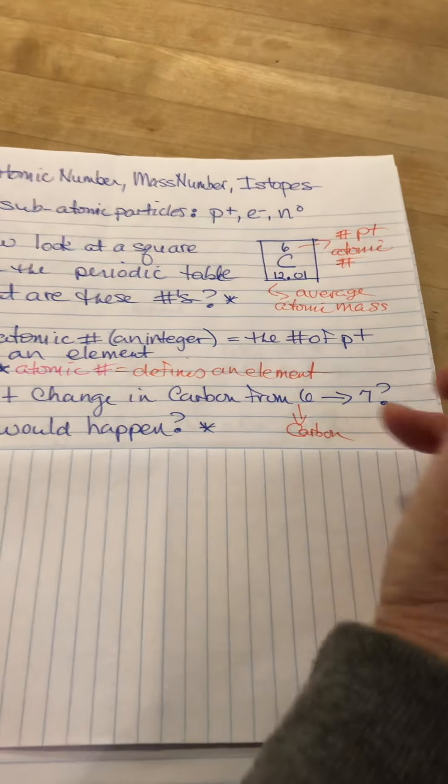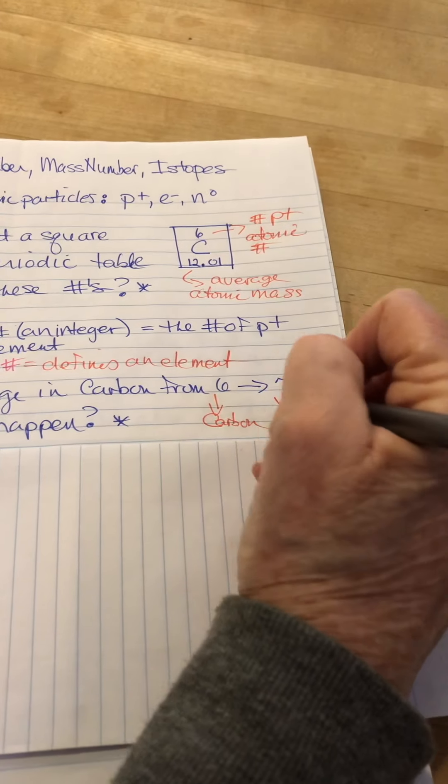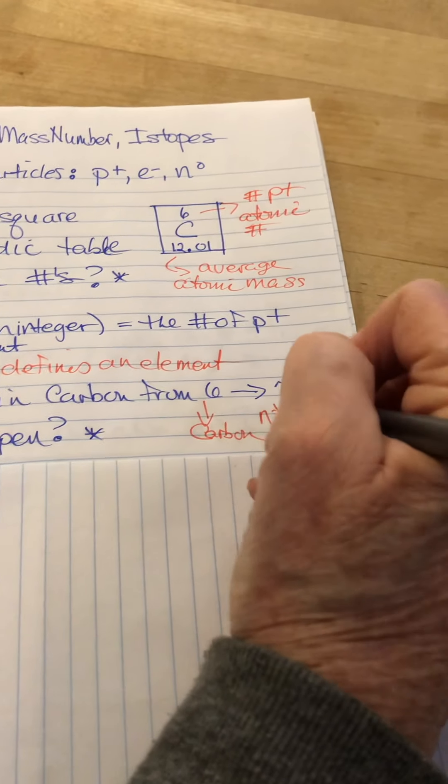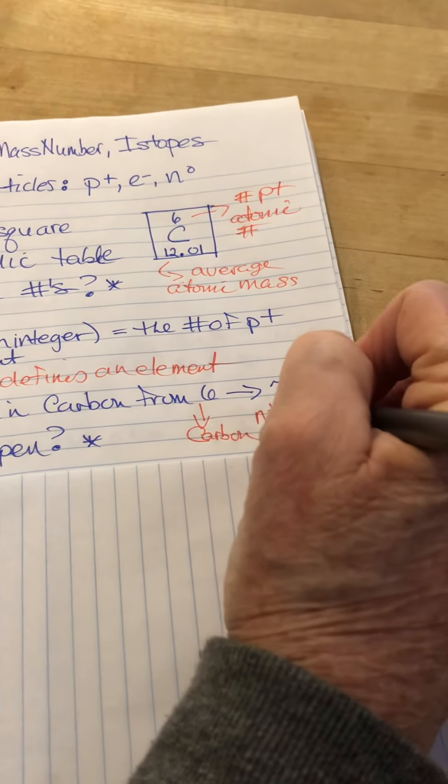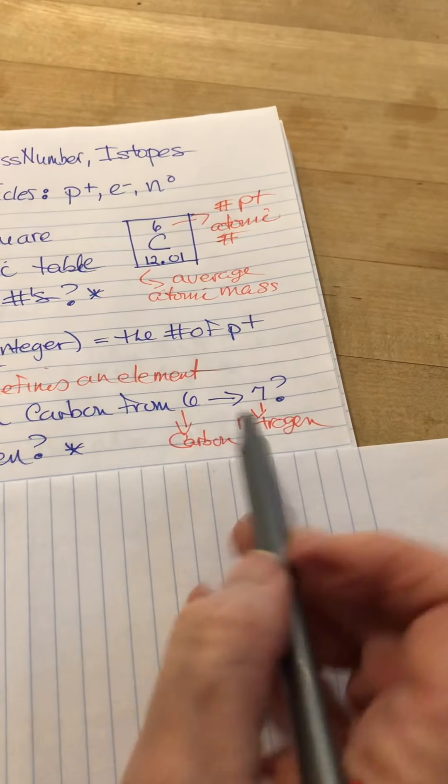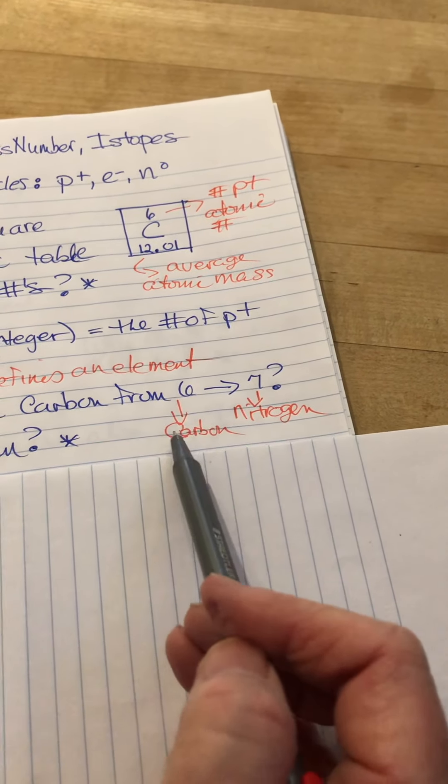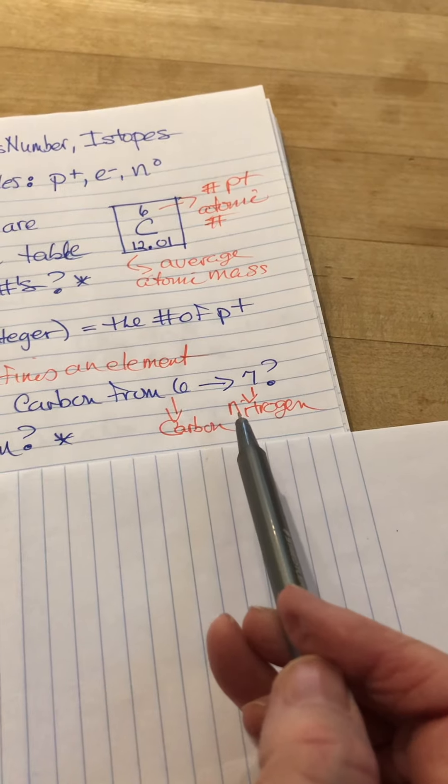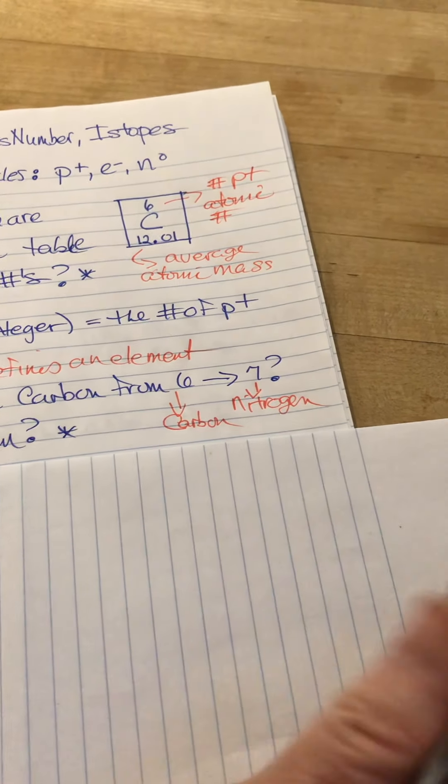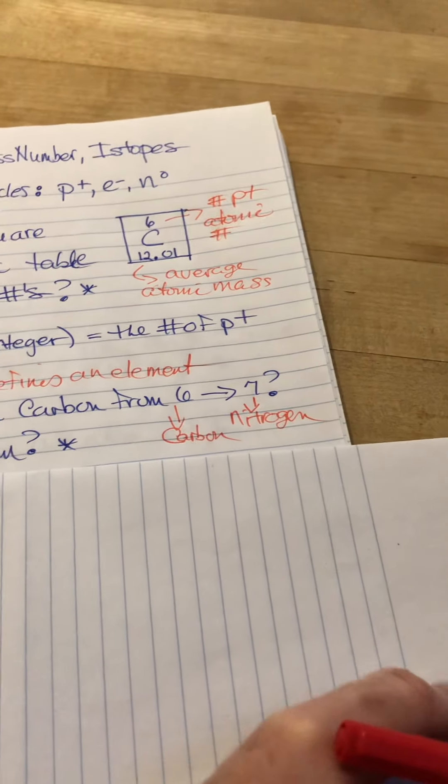Something with an atomic number of six is carbon. Something with an atomic number of seven is nitrogen. So when you change the number of protons, you automatically change the element. Don't forget that because it's super important for solving all kinds of problems.